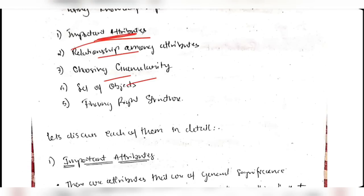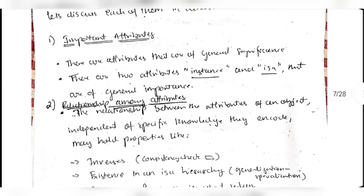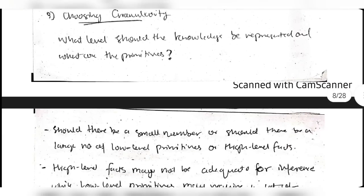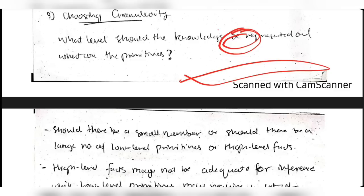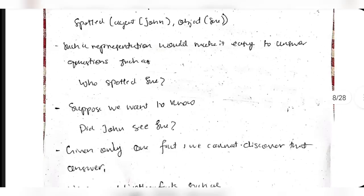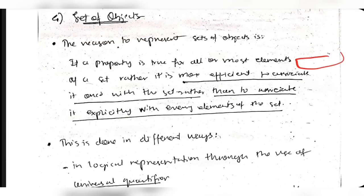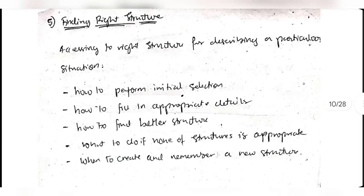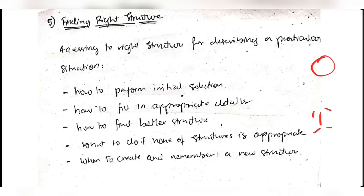Key points to remember for the exam: Important attributes - remember 'is-a' and 'instance.' Relationship among attributes - remember four things: inverse, existence, techniques for reasoning, and single-valued attributes. Granularity - low-level facts give more precision but require large storage; high-level facts give rough values. Set of objects - use universal quantifier to represent collectively. Finding right structure - choose initial selection, fill appropriate details, create new structure if none fit.